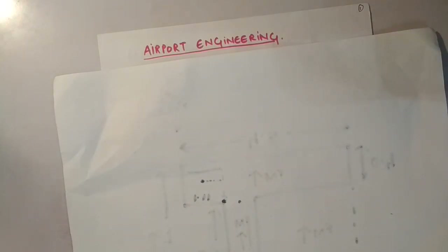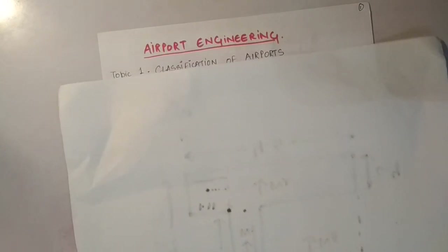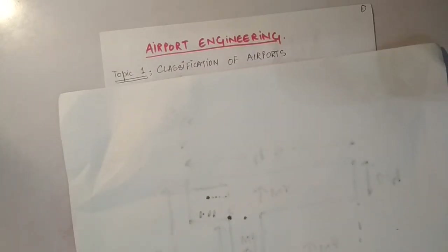Now we are in a completely different subject — airport engineering, which is our 7th semester topic. We will start with basics. The first topic in airport engineering is classification of airports. So how does the classification of airports happen?